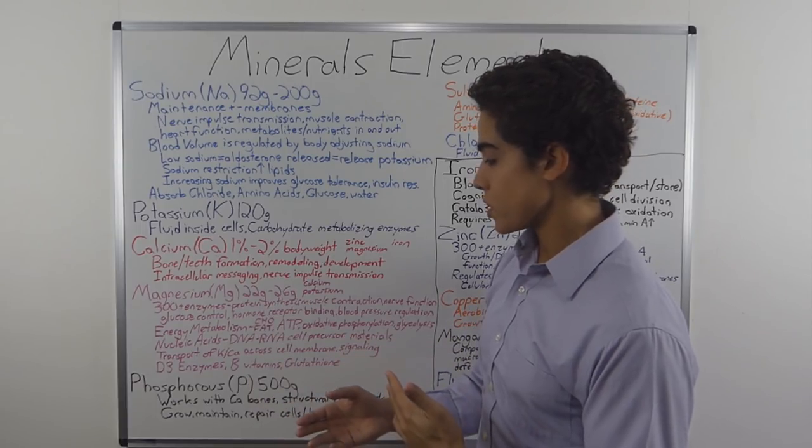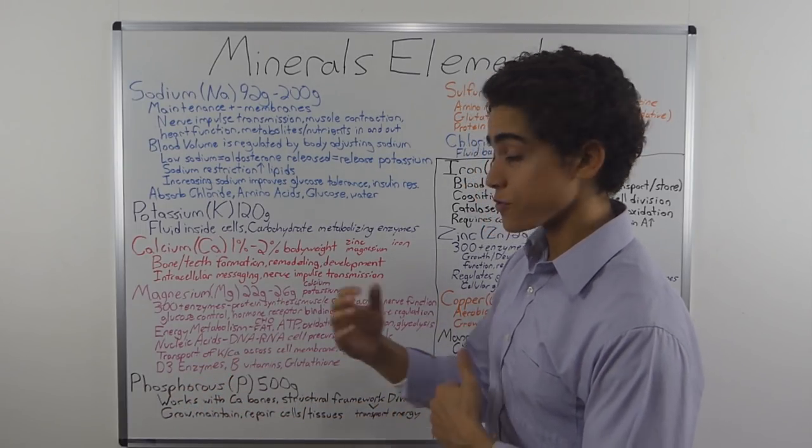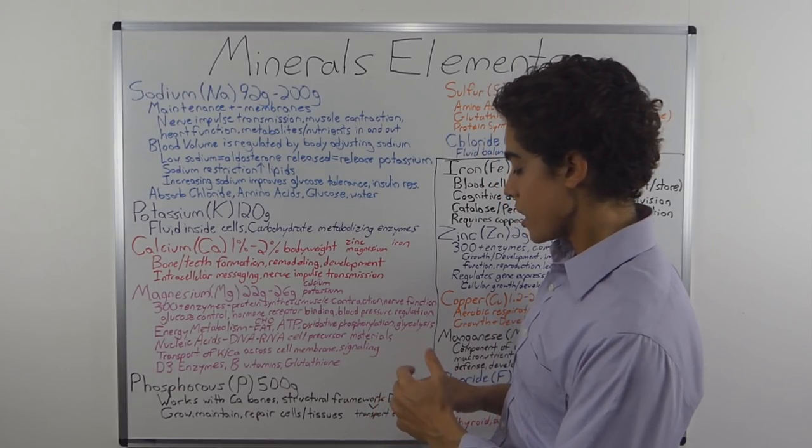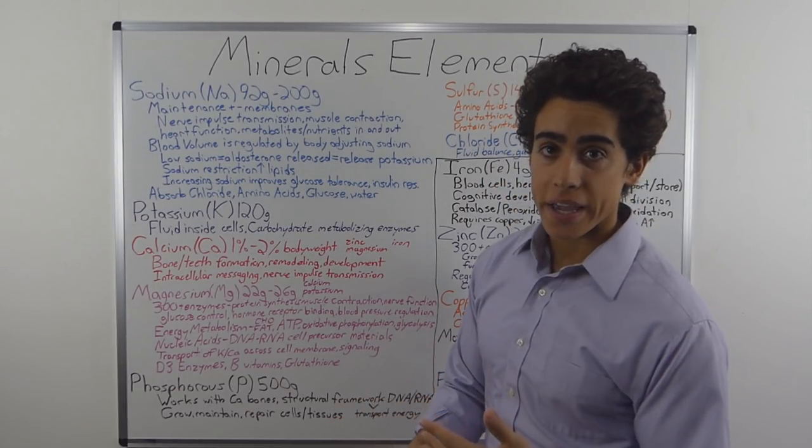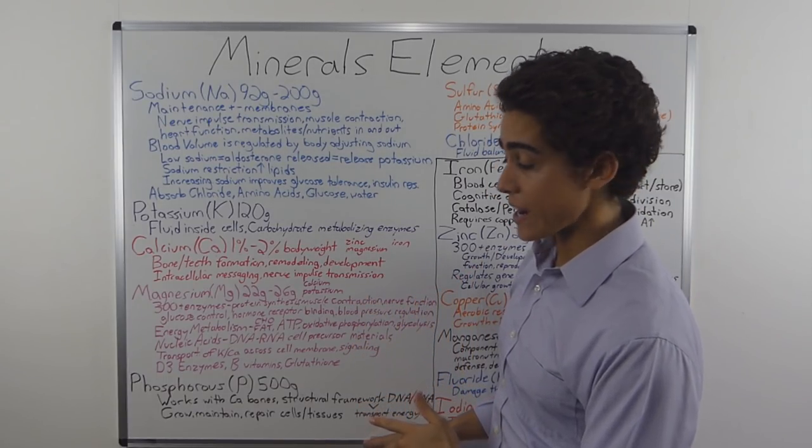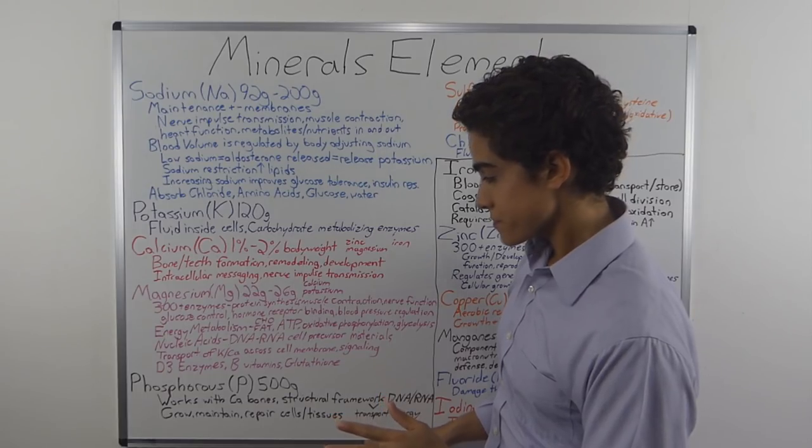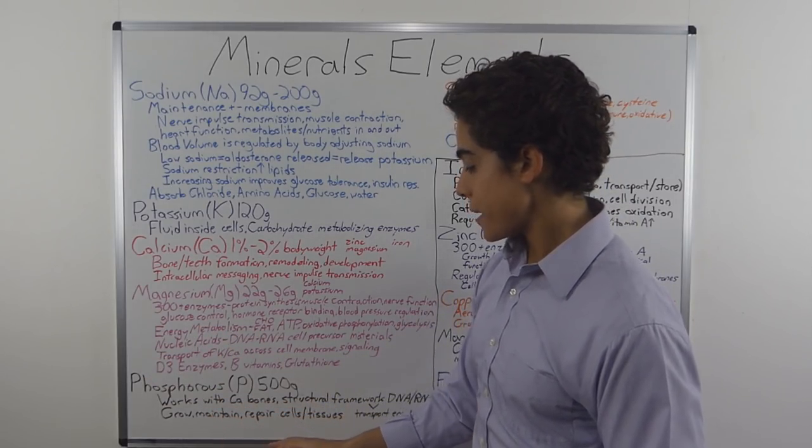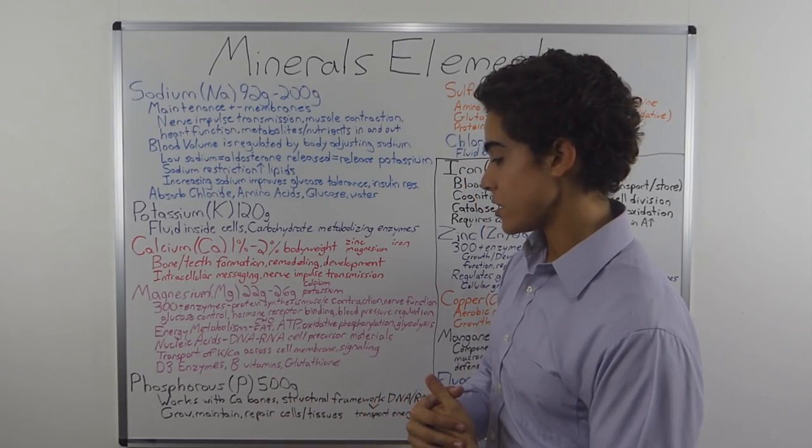Phosphorus is also another very abundant mineral, one of the most common ones. It works with calcium to form bones and is also part of the structural framework of DNA and RNA, which means it is needed in every cell in the body to transport energy. But the chief function of phosphorus is the growth, maintenance, and repair of cells and tissues.